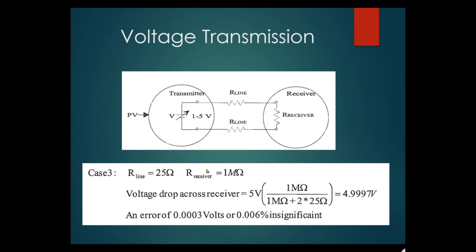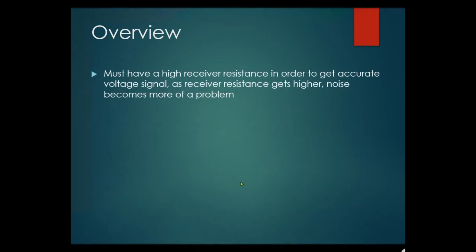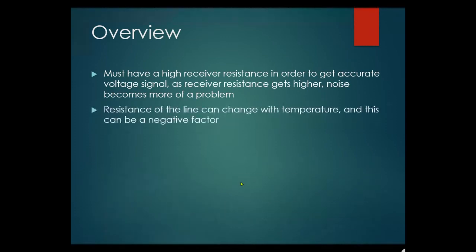Case three: with an even higher receiver resistance, the voltage drop approaches 4.9997 volts — an error of only 0.003. This shows that for voltage transmission loops, you need a high-impedance receiver so most of the voltage drops across the receiver and not the lines. The receiver resistance must increase to achieve an accurate voltage signal, but as receiver resistance gets higher, noise becomes more of a problem and resistance of the line can change with temperature.